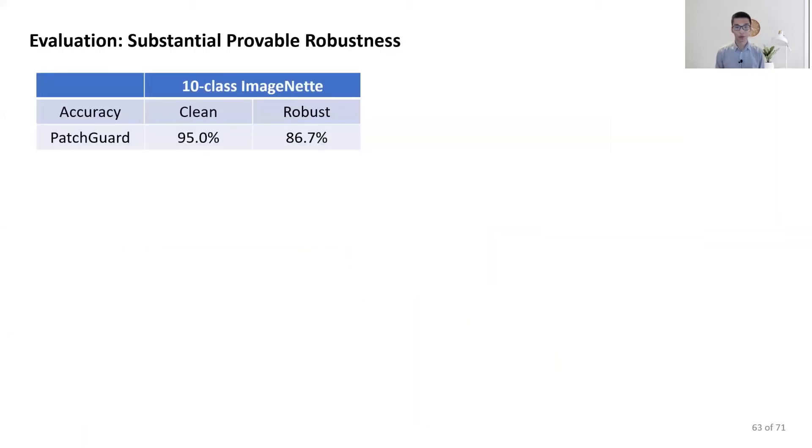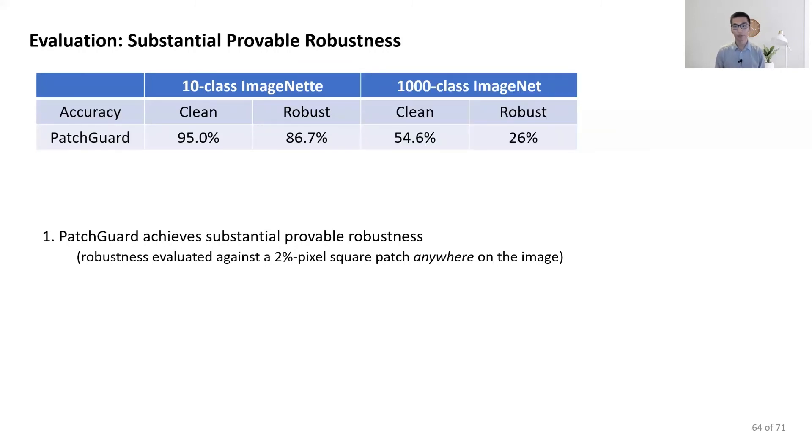In our evaluation, we first worked on a 10-class subset of ImageNet dataset. We show that the provable robust accuracy is nearly 87%. That means for 87% of the test images, an attacker using a 2% pixel square patch anywhere on the image can never bypass our defense. Our prediction is always correct. The number for the 1000-class ImageNet is 26%. That is for the top one.